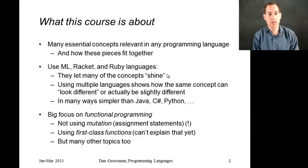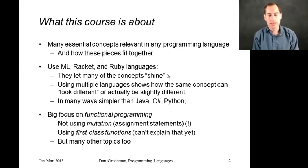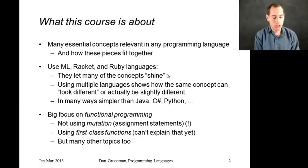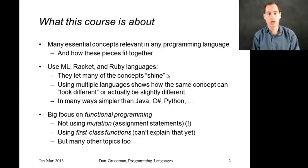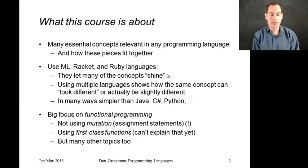We're going to use three languages: ML, Racket, and Ruby. The reason why we're going to use those is that they complement each other in different ways. They are functional languages; Ruby is an object-oriented language. And they let the concepts that I want to focus on really shine.